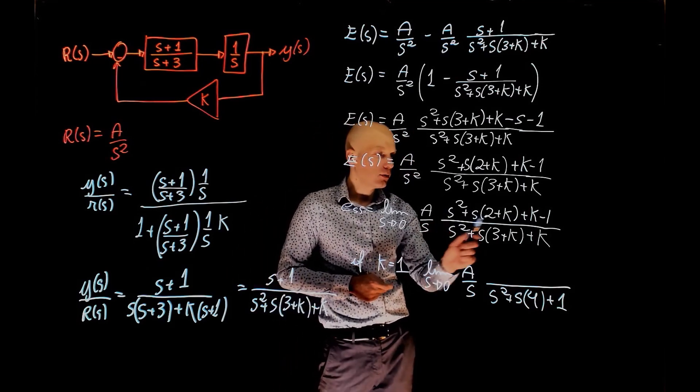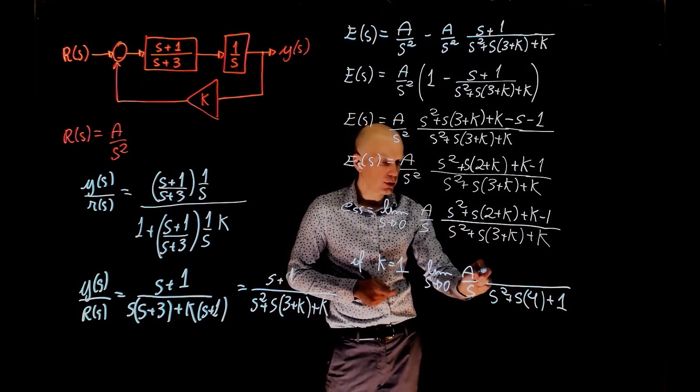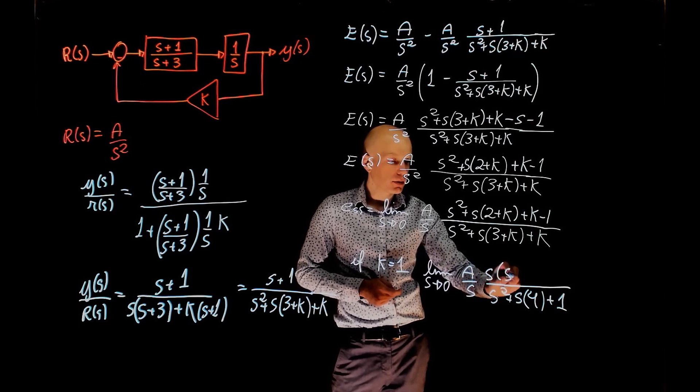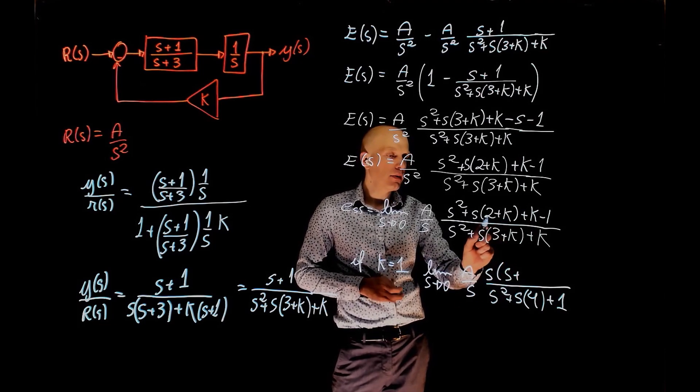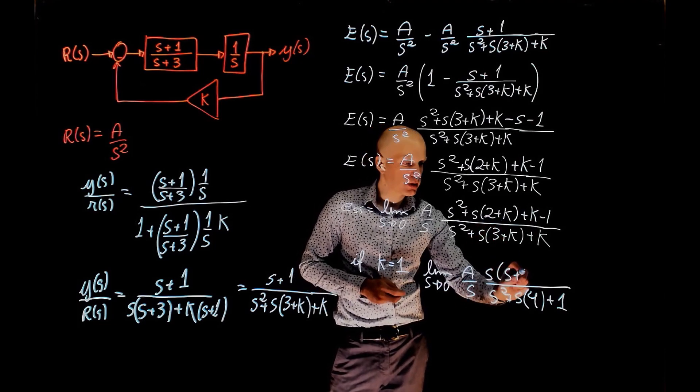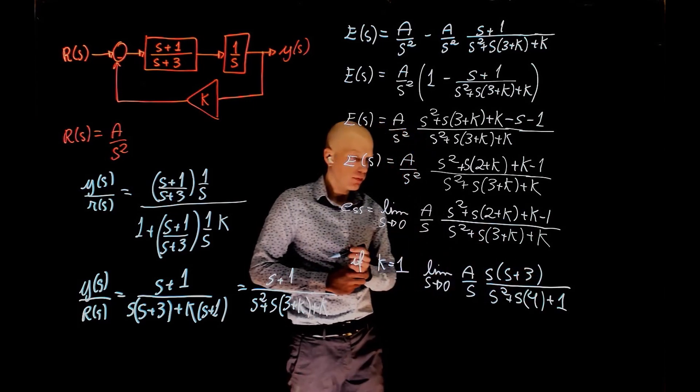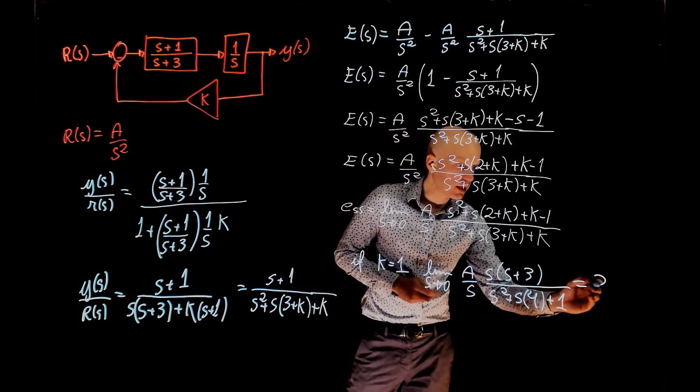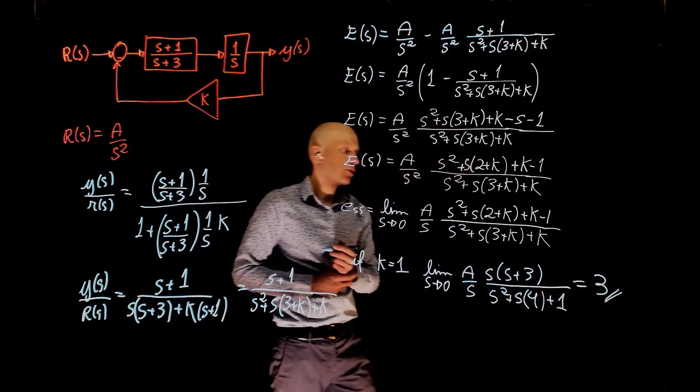And the top now, this term goes to 0, we can factor one of the s's here, so we have s, s plus 2 plus k, k is 1, s plus 3. And when s tends to 0, the steady state error tends to 3.